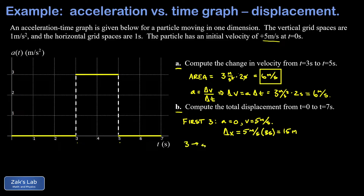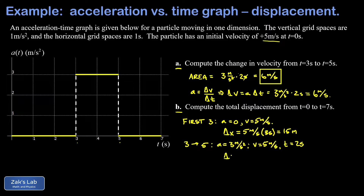Next we look at the time interval where the acceleration was constant, from three to five seconds. Now we have a constant acceleration kinematics problem. The acceleration is three meters per second squared, the initial velocity is five meters per second, and the acceleration lasts for two seconds.